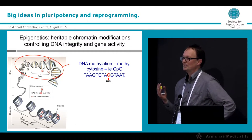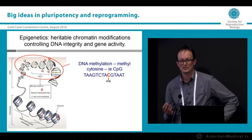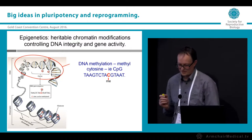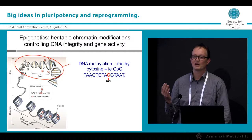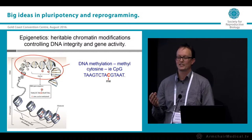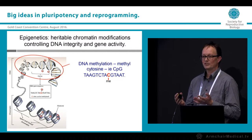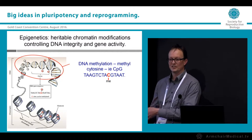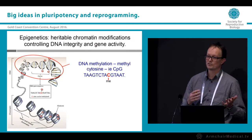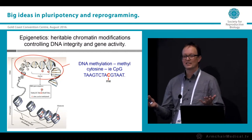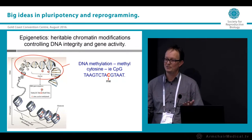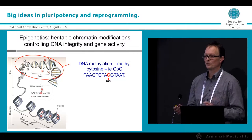Epigenetic mechanisms essentially stabilize the lineage identity of cells, or the functional identity of cells. This is achieved through broad regulation of transcriptional profiles — switching off genes and switching on genes in a stable way, repressing cohorts of genes or allowing other cohorts to be activated. Every cell in the body contains the same DNA but has many different cellular phenotypes, and epigenetic mechanisms are largely responsible for those phenotypic differences.